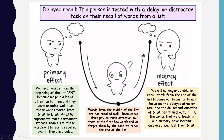With delayed recall — when a person is asked to complete a distracted or delayed task before recalling — the recency effect is eliminated. The delay exceeds the 30-second maximum duration of short-term memory, so those end-of-list words are displaced and forgotten. The primacy effect remains: words from the beginning, safely stored in long-term memory, continue to be recalled well. Words from the middle remain poorly recalled in both conditions.